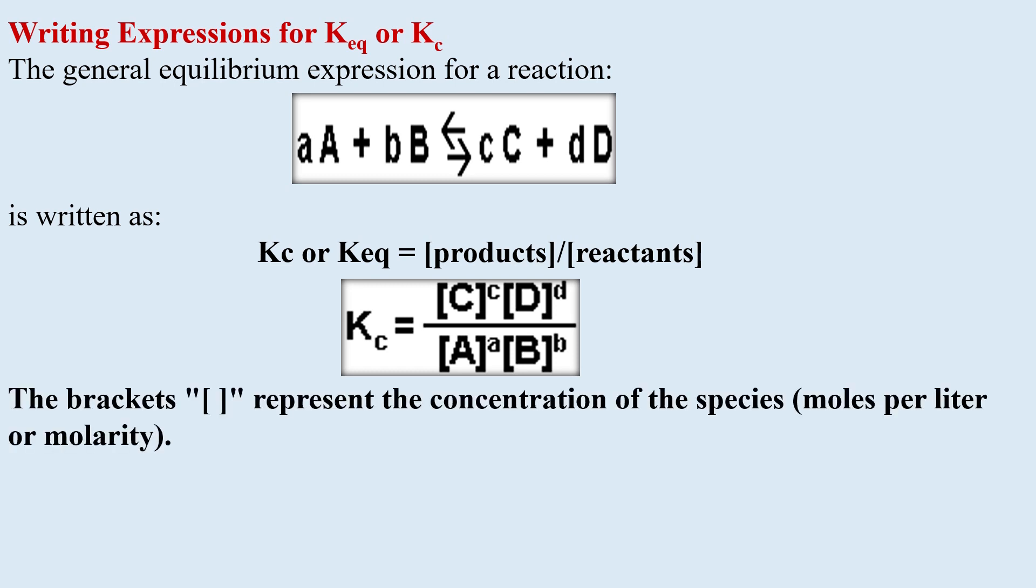The brackets represent the concentration of the species in moles per liter or molarity. Lowercase a, b, c, and d represents the coefficients used in the balanced equation.